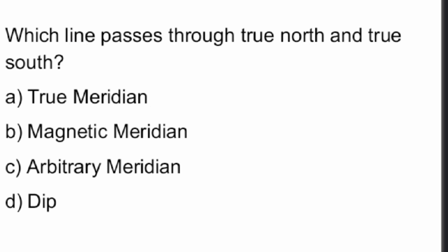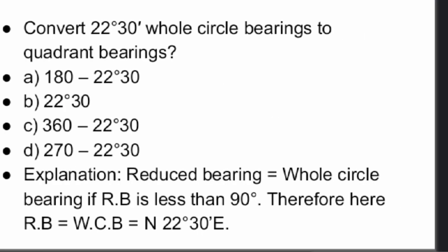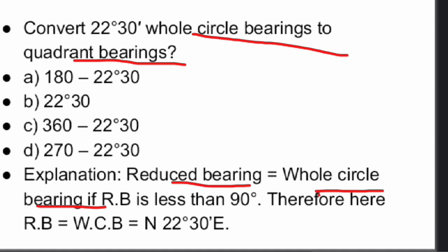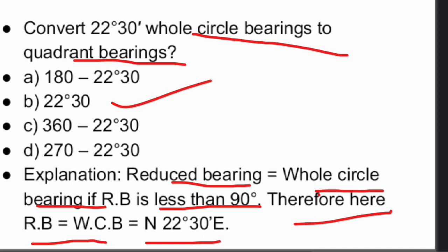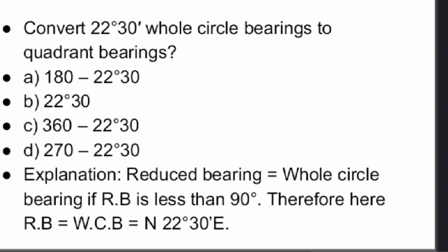Next question: convert 22 degrees 30 minutes whole circle bearing to quadrant bearing. The reduced bearing (RB) equals the whole circle bearing (WCB) if RB is less than 90 degrees. Therefore, the answer is N 22° 30' E. Option B.